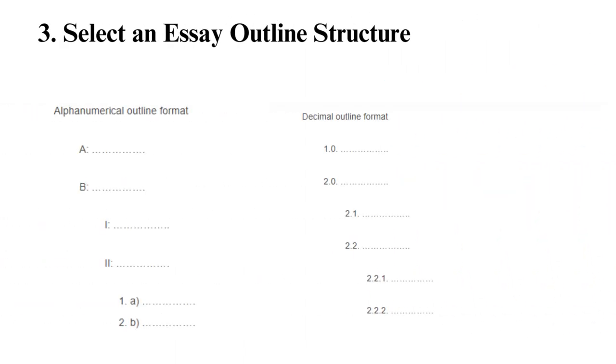3. Select an essay outline structure. The third step on how to write an essay outline is to choose an essay outline structure. Many students prefer an alphanumerical outline format, but there are those who go for the decimal outline format.